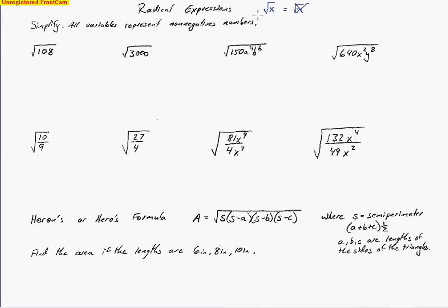So what we're going to end up doing is taking out the perfect squares that are factors of these numbers. You want to think of factors that are perfect squares — the square root of 4, the square root of 9, the square root of 16, the square root of 25, and so on. You could also think of 49 or 64 or any of those, but these are the main ones when numbers aren't too large. As I look at 108,